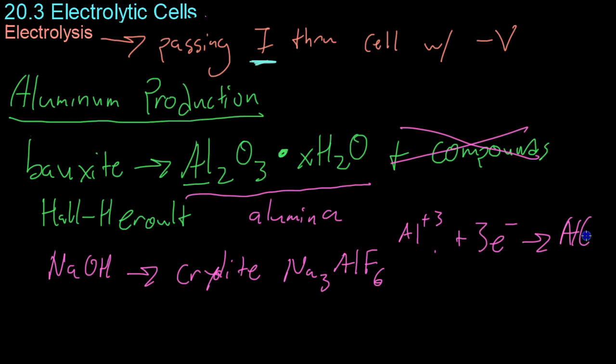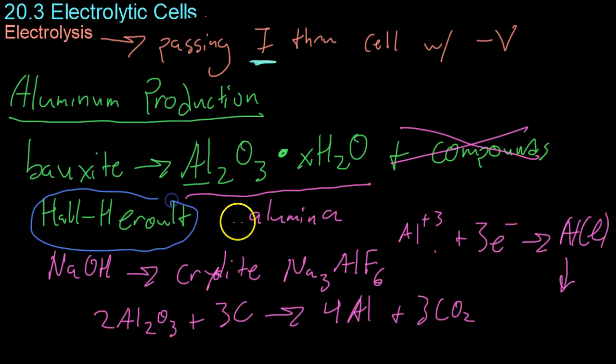Which then falls out of solution and is then collected up. And the full procedure that happens in solution is you have two aluminum oxide molecules and three carbon atoms yielding four solid or liquid aluminum atoms plus three molecules of CO2. And because this Hall-Heroult process uses 5% of the total energy in the U.S. every year, it's really important to recycle your aluminum cans and whatnot to save on power.